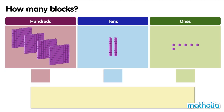How many blocks? Let's count the blocks in each place. There are four hundreds, two tens, and six ones. To find the total number of blocks, let's add the place values of each digit.